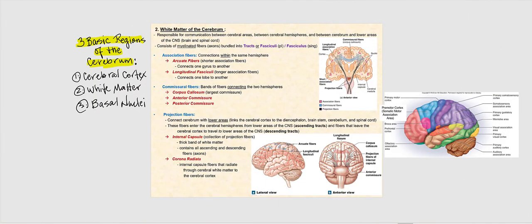One of the basic regions of the cerebrum that we've just finished discussing is the cerebral cortex. The next thing we are going to discuss is the white matter — the region of the cerebrum directly deep to the cerebral cortex. This white matter is responsible for communication between cerebral areas, between the cerebral hemispheres, and even between the cerebrum and lower areas of the central nervous system, the brain and the spinal cord. This white matter consists of myelinated fibers, specifically axons bundled together, forming what we call tracts.